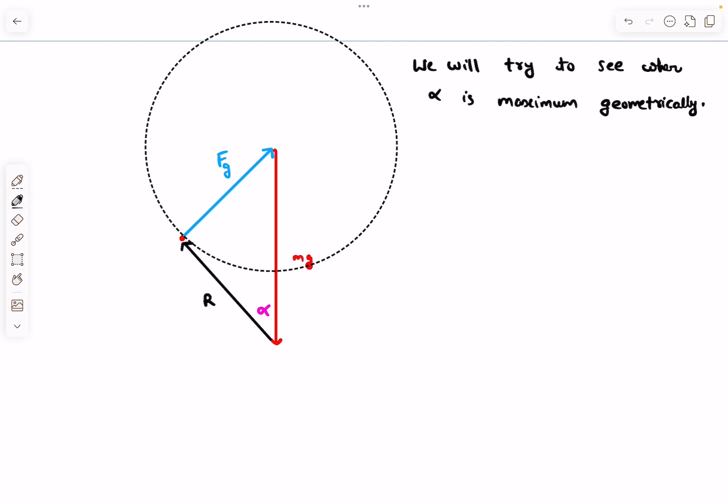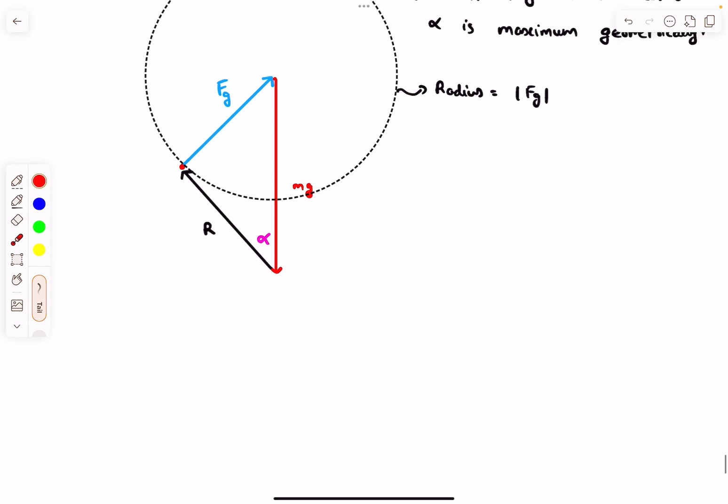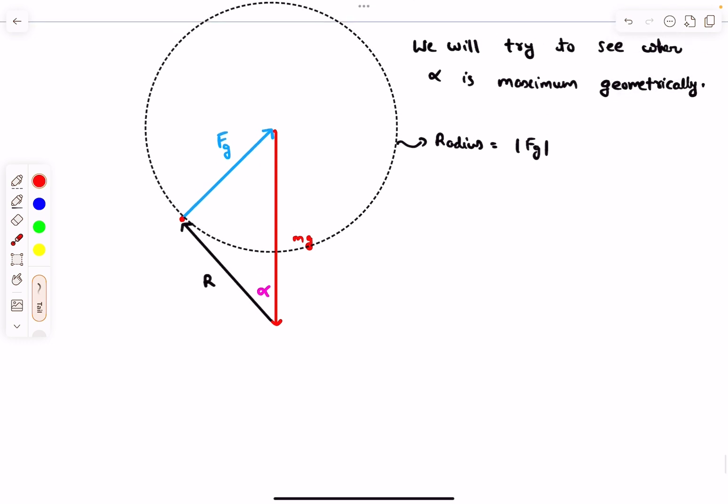I'll draw a circle whose radius is equal to Fg. This is the circle whose radius equals the magnitude of Fg. This Fg vector keeps rotating on the circle. After some time, Fg vector will point in this direction, and from this vector triangle we can determine the value of R. The new R vector will be in this direction. This circle represents all the possibilities of the vector Fg.